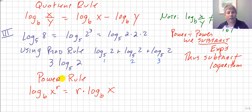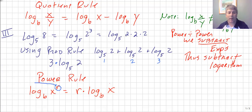That leads us to our power rule. A power raised to a power — we multiply the exponents, and here we multiply our logarithms. Our power rule says: log base b of x raised to the r power equals r times log base b of x. The r comes down and becomes a multiplier.